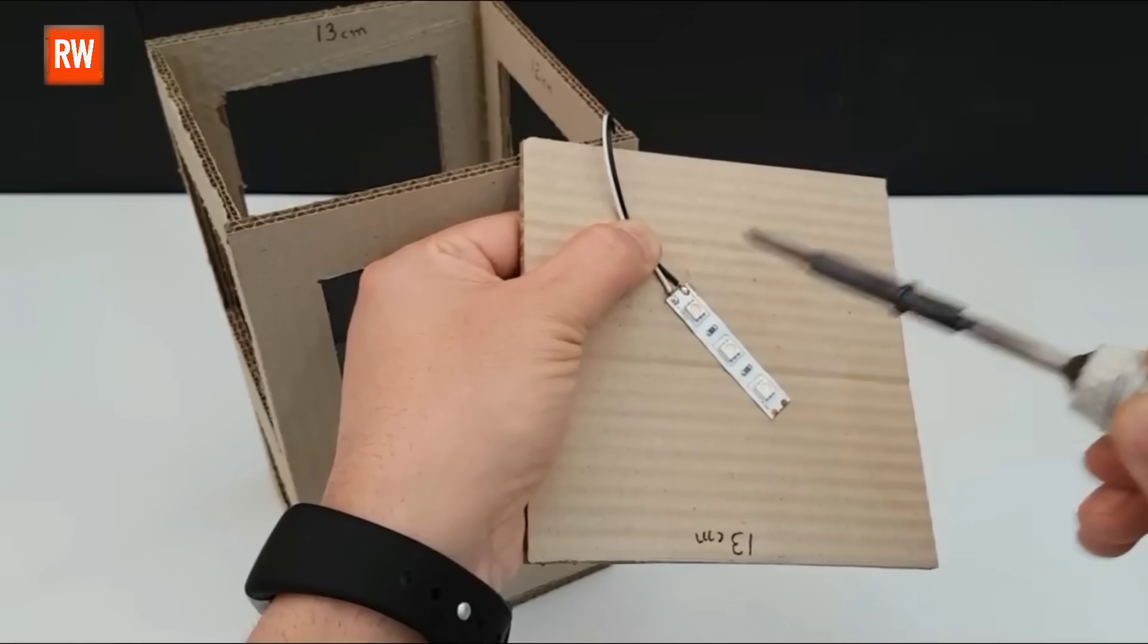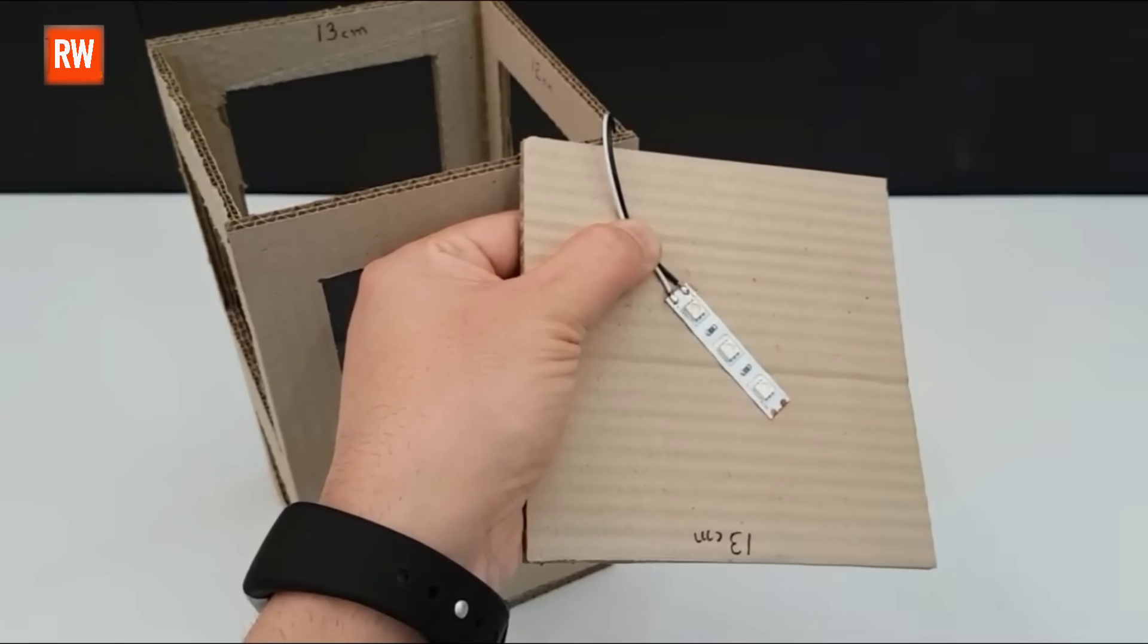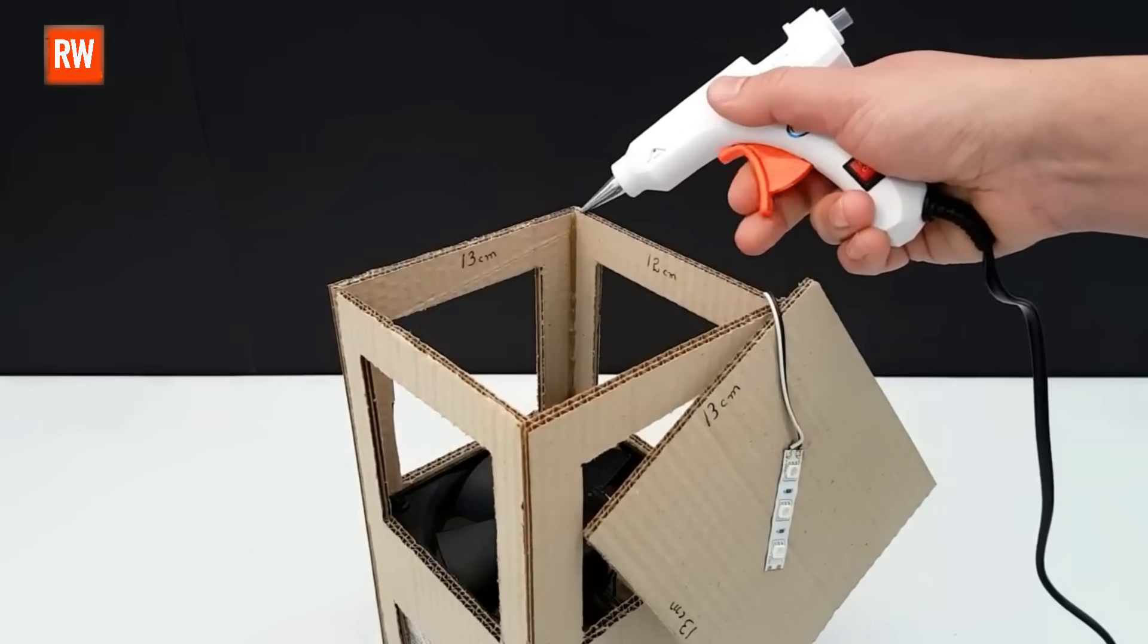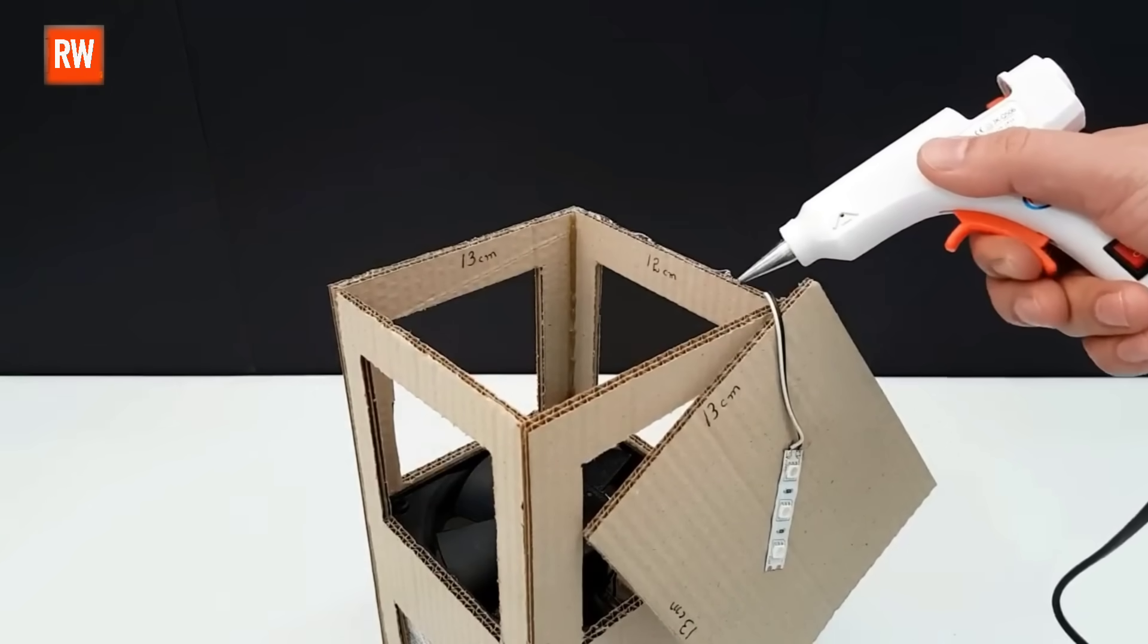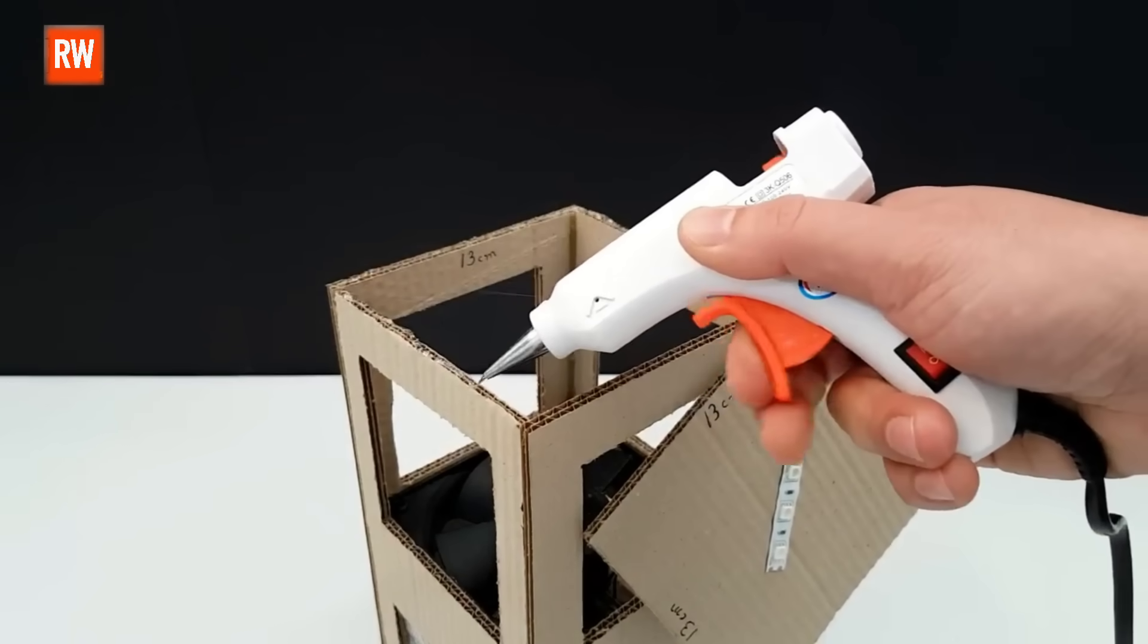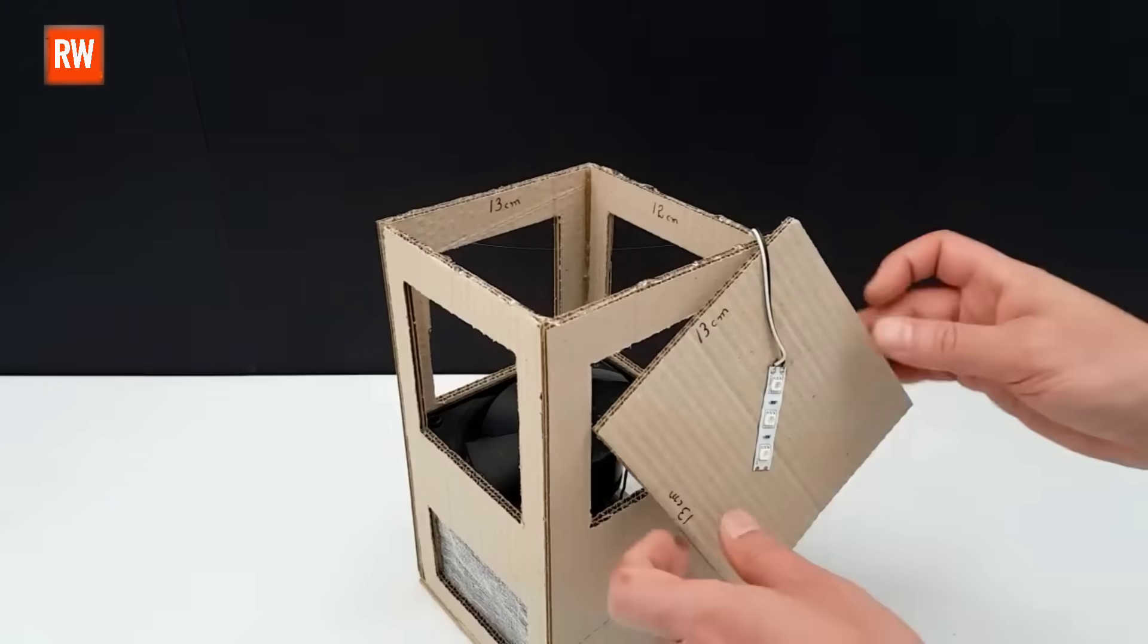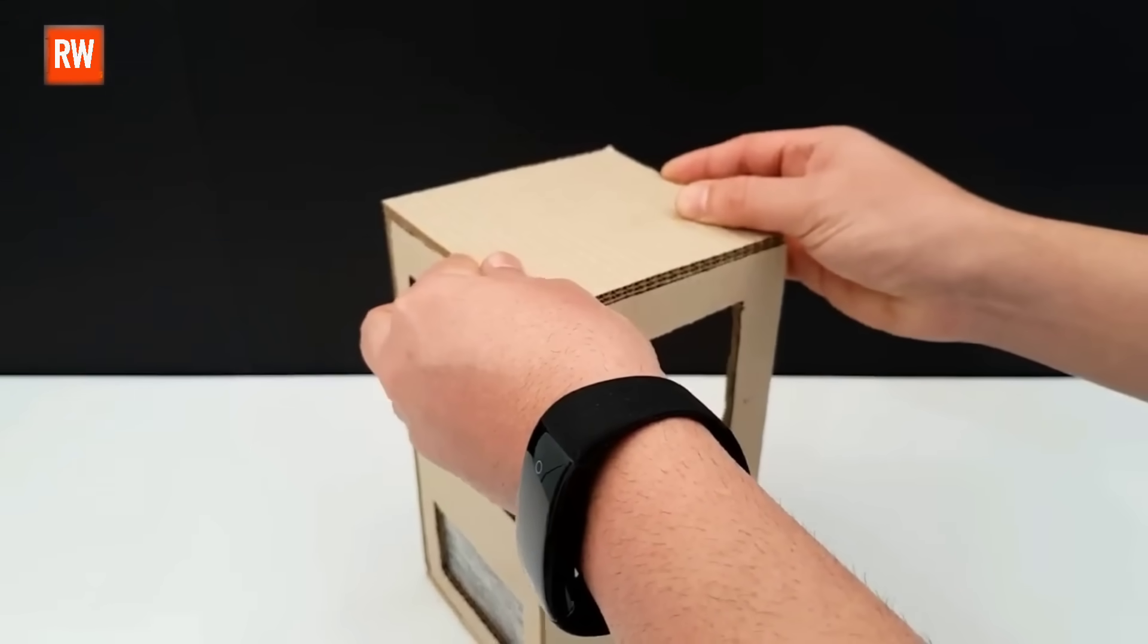Next, we'll complete the wiring using a soldering iron to create strong and reliable connections. Next, we attach the top cardboard piece using a hot glue gun to ensure a firm and stable fit. After assembling all the components and completing every step, our mosquito killer device is finally ready and fully functional. It's now all set for use.